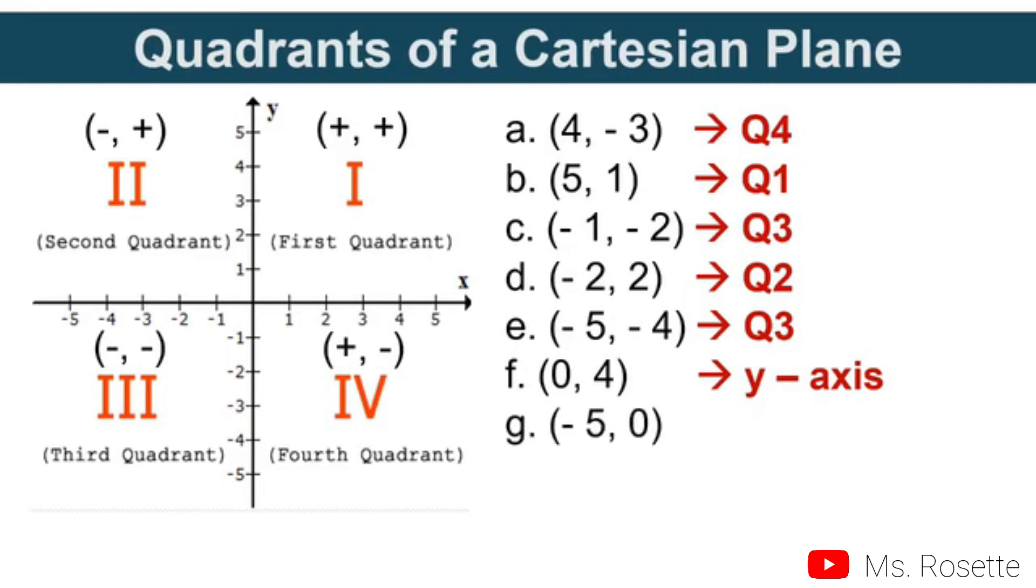Another example: (-5, 0). In this example, the x-coordinate is -5, while the y-coordinate has no sign. It's neither positive nor negative. Therefore, it does not belong to any quadrant. What will be the location of (-5, 0)? This will lie on the x-axis since the only coordinate we have is x.